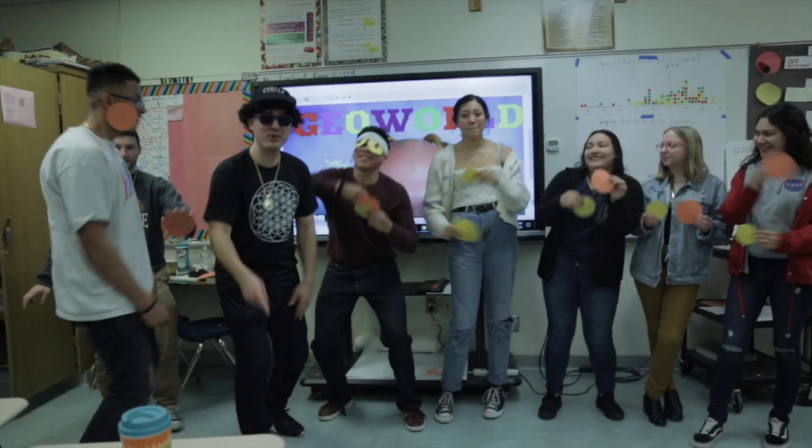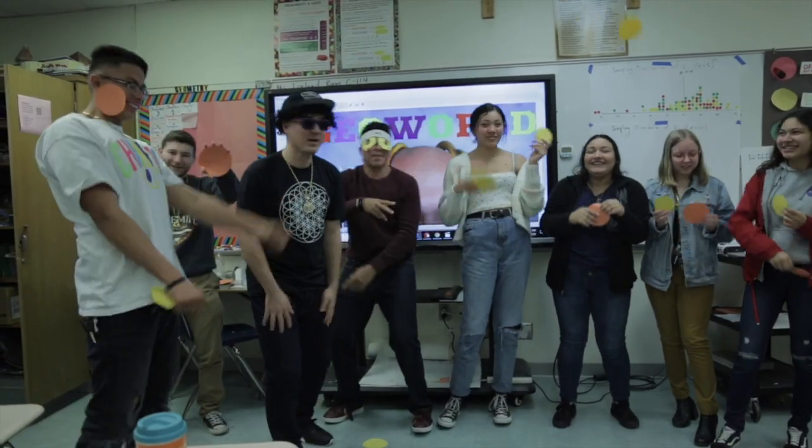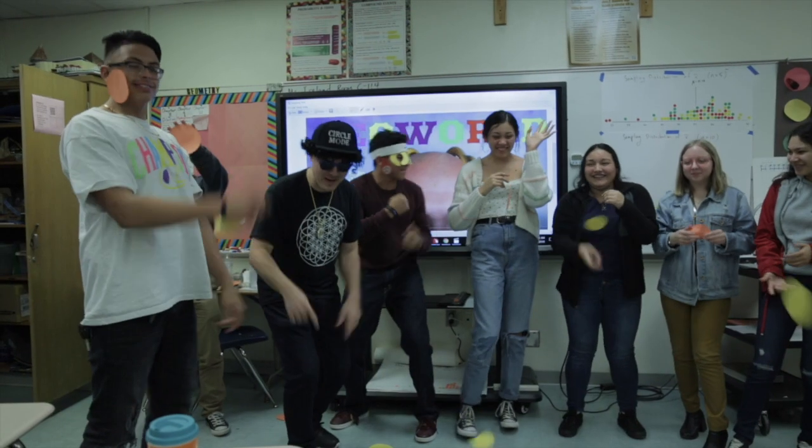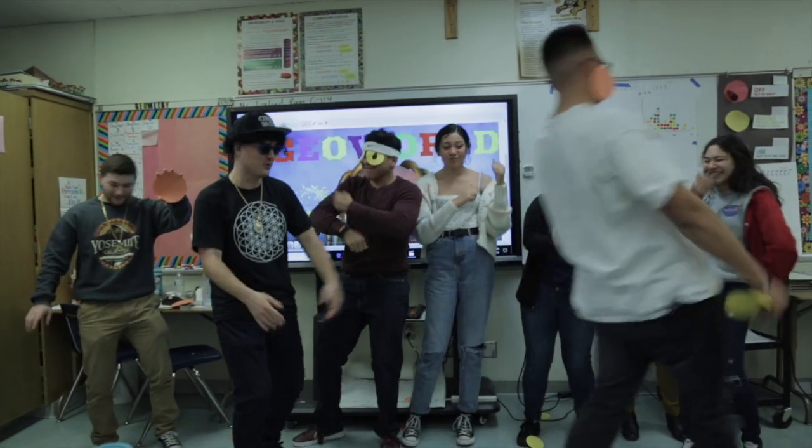X minus H to the power of 2, add Y minus K to the power of 2, equal to R to the power of 2. This is the standard equation of a circle, I thought you knew.